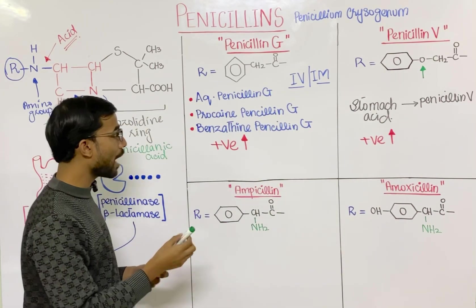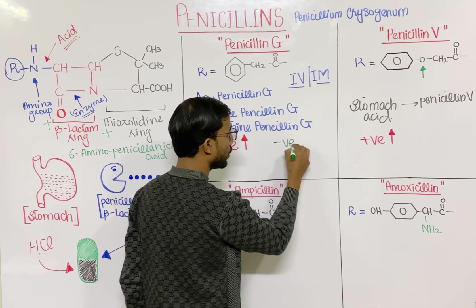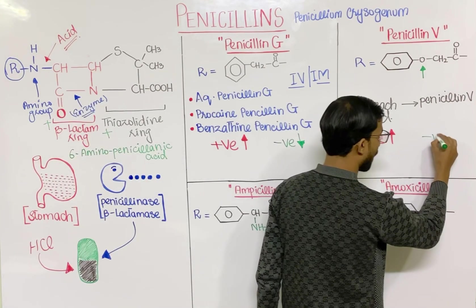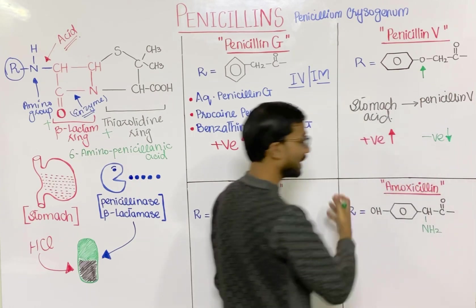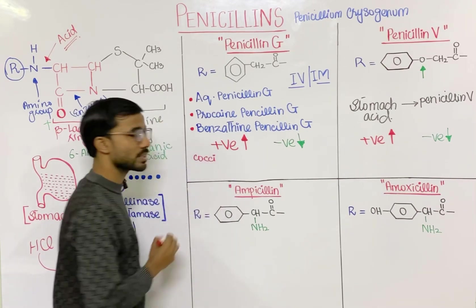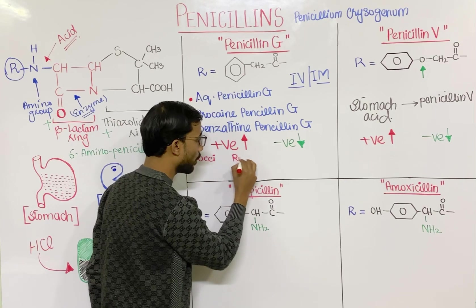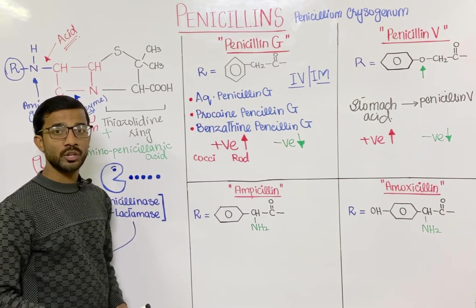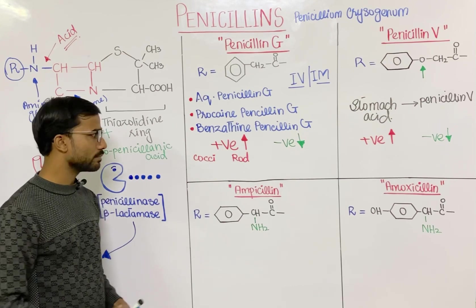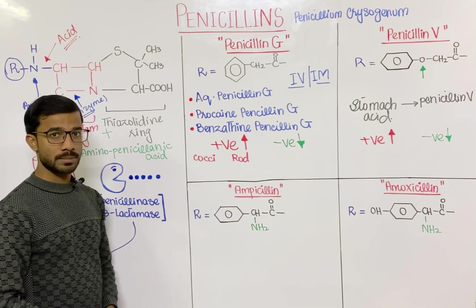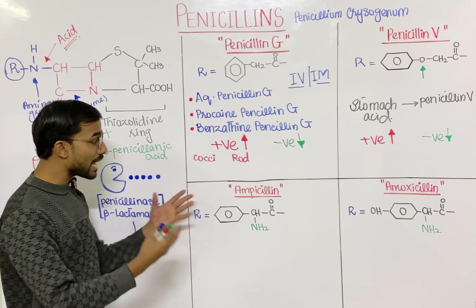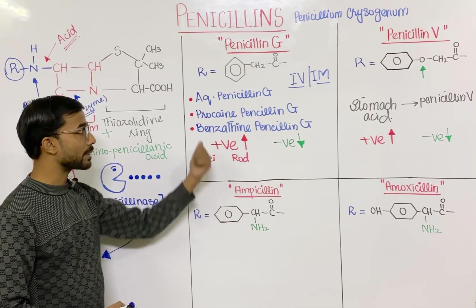Gram-negative bacteria do not easily get destroyed by penicillin G and penicillin V. For gram-positive types, you will see cocci and rods. In gram-positive cocci, you will see Streptococcus pneumoniae, Streptococcus pyogenes, and viridans streptococci. In gram-positive rods, you will see Bacillus anthracis and Corynebacterium diphtheriae — these are bacteria susceptible to penicillin G.